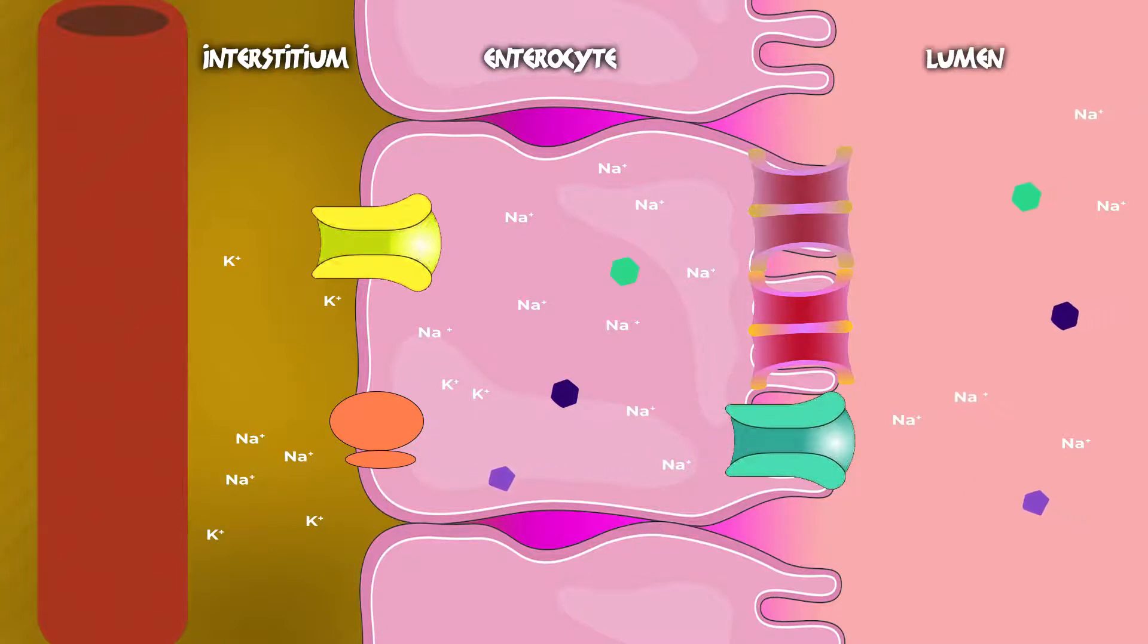After all this, the concentration of these three monosaccharides rises inside the cell, and so they want to exit. On the basal surface, we have transporters which allow for facilitated diffusion of glucose, galactose, and fructose out of the cell into the interstitium, from where they can be freely taken up by the blood capillaries and transported to various destinations.